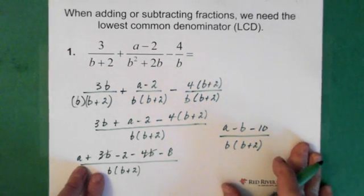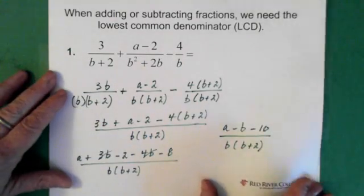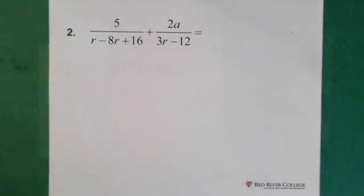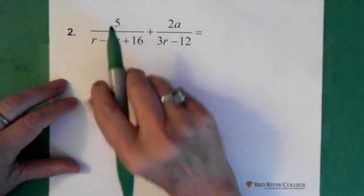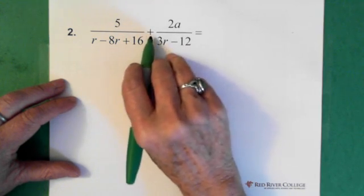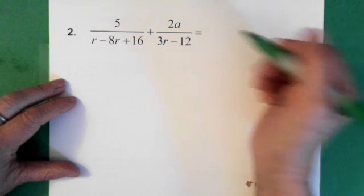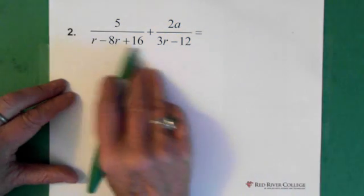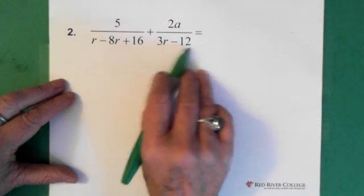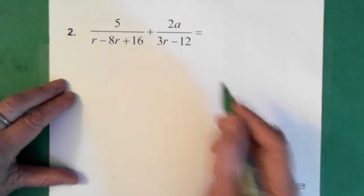So that's (a - b - 10) over b(b + 2). Okay, so that's that one. Now the next question. Here we have 5 divided by r - 8r + 16 added to 2a over 3r - 12. So this one is factorable and this is factorable as well. So let's just do that piece.